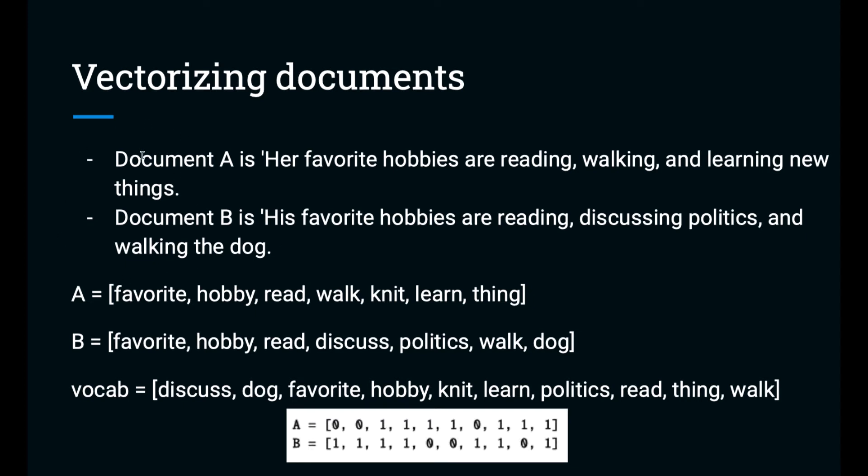So far, there are only two documents in our corpus. First, let's represent A and B as just a list of words. And from there, we can get our vocabulary, which we've put in alphabetical order.